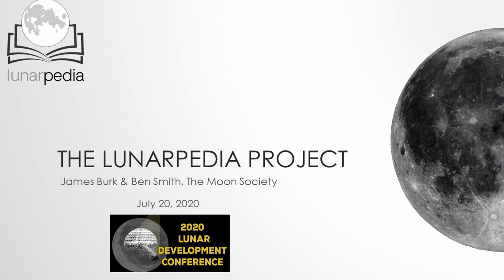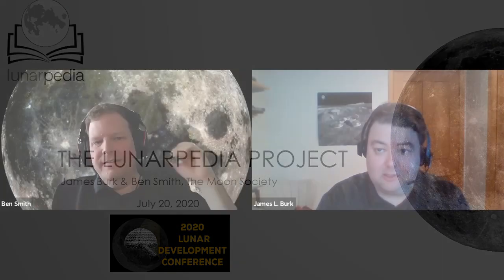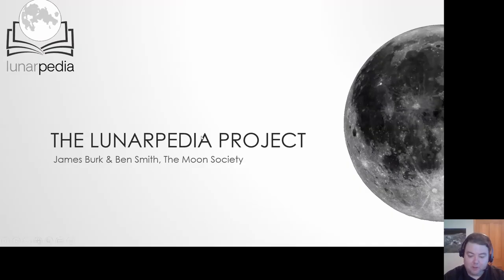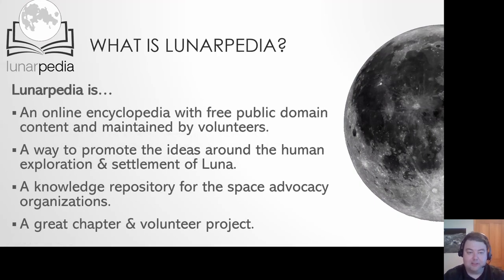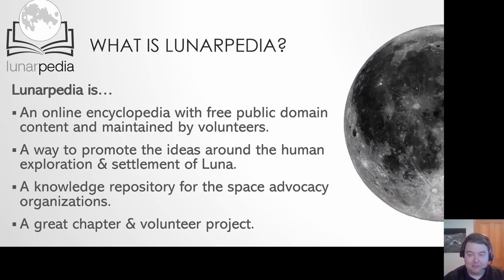My name is James Burke and I'm here with Ben Smith. We're both with the Moon Society and we'd like to talk to you about Lunarpedia. Lunarpedia is a free online encyclopedia that the Moon Society started in 2007, and we're trying to really grow it in a big way in the near future. We'd like to add a lot of new volunteers and work on some mini projects within this main project overall. Let me talk first about what Lunarpedia is and what the goals of it are.